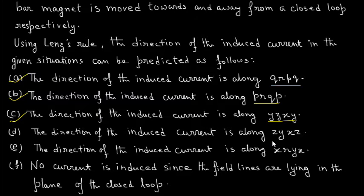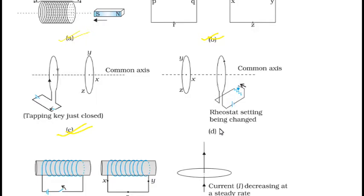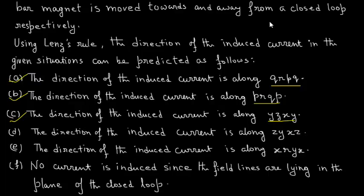Let us see problem D. The solution to problem D: the direction of the induced current is along ZYXYZ.